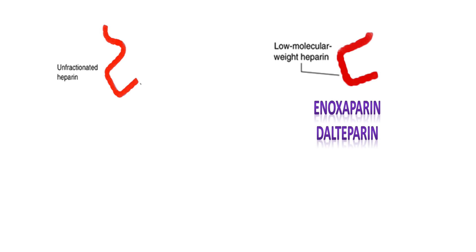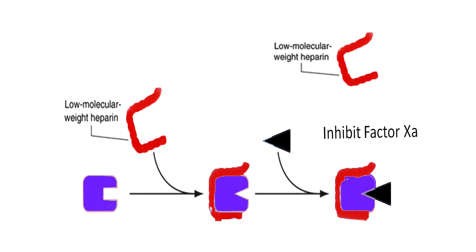Unfractionated heparins are 45 saccharide units long with a molecular weight of 15,000 Dalton, whereas low molecular weight heparins are 15 saccharide units and around 5,000 Dalton. They include enoxaparin, dalteparin, etc. They inhibit factor Xa.